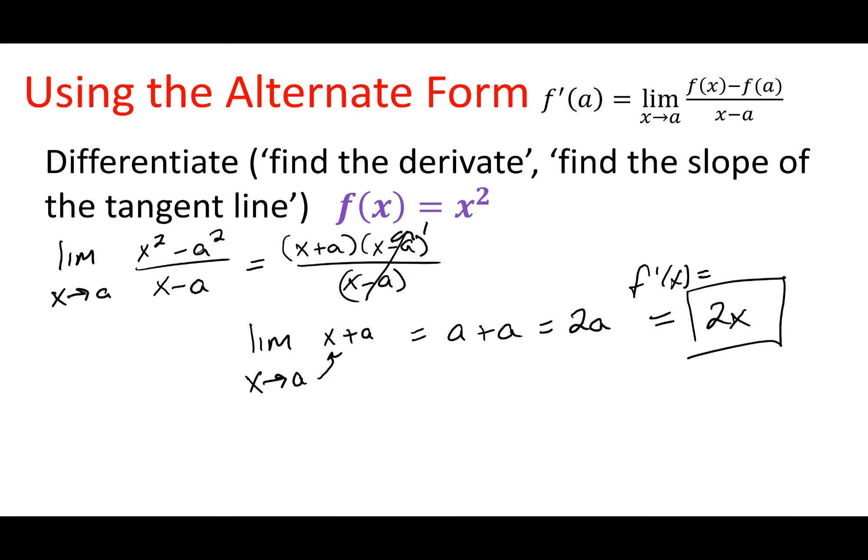Everybody always asks: which one do I use — the X approaches A form, or the H approaches zero form? There's no clear-cut one way or the other. Personally, if they tell me to find it at a specific number, I probably use the X approaches A form more often. And if they ask me to find just the general function, I do it as H approaches zero. Whatever you feel most comfortable with, use it. If you get stuck, try the other one.